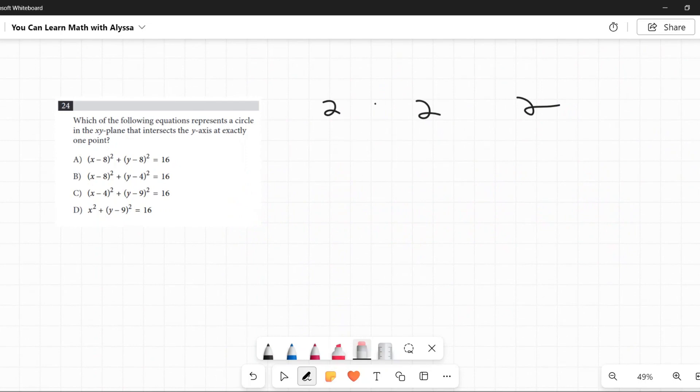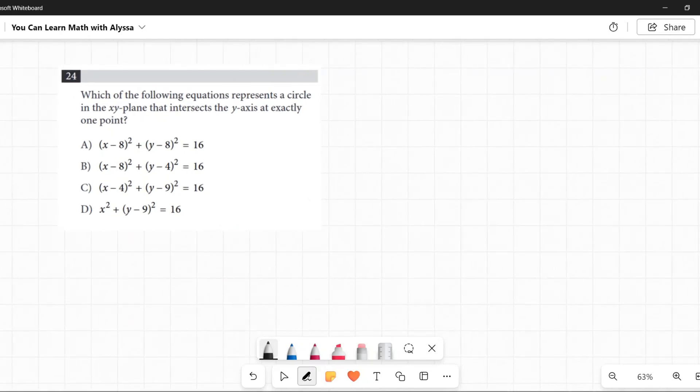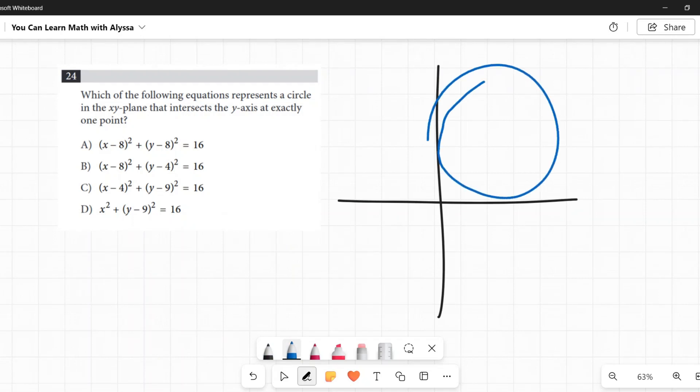So let's look at these equations of circles that we have. First one, we want one that intersects the y-axis at exactly one point. So that means it's a circle, and it is just touching at one little point, and that's it. All right.